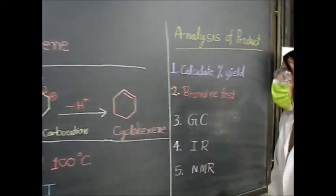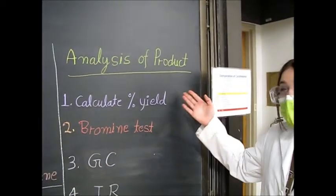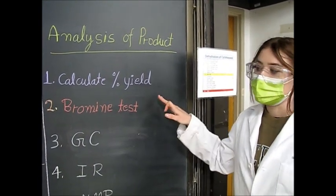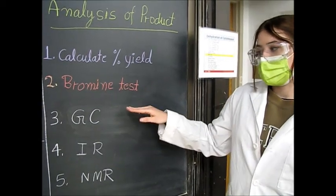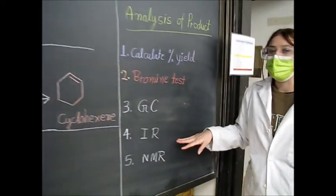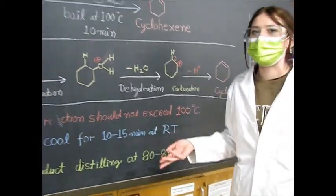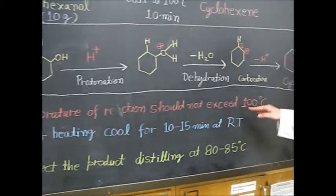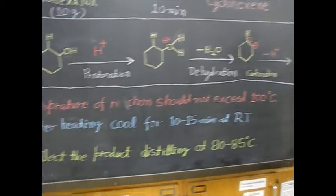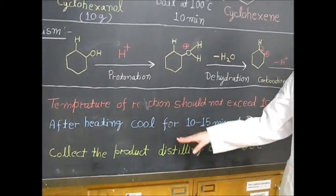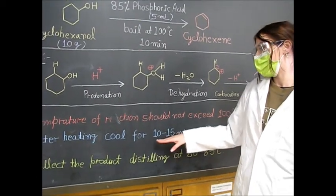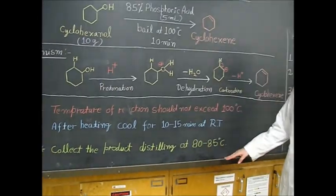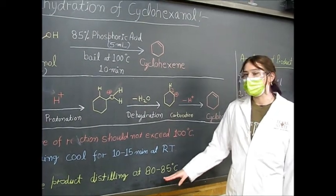After completion of this lab, there are several different analyses we can do. We specifically are going to be doing percent yield and also the bromine test. Scientists could also run GC, IR, or NMR to determine not only the identity of the product but the purity. A few more key notes: the temperature of the reaction should never exceed 100 degrees Celsius. After fractional distillation, you'll need to cool for about 10 to 15 minutes at room temperature. During simple distillation, you only collect the final product, which will be cyclohexene from 80 to 85 degrees Celsius.